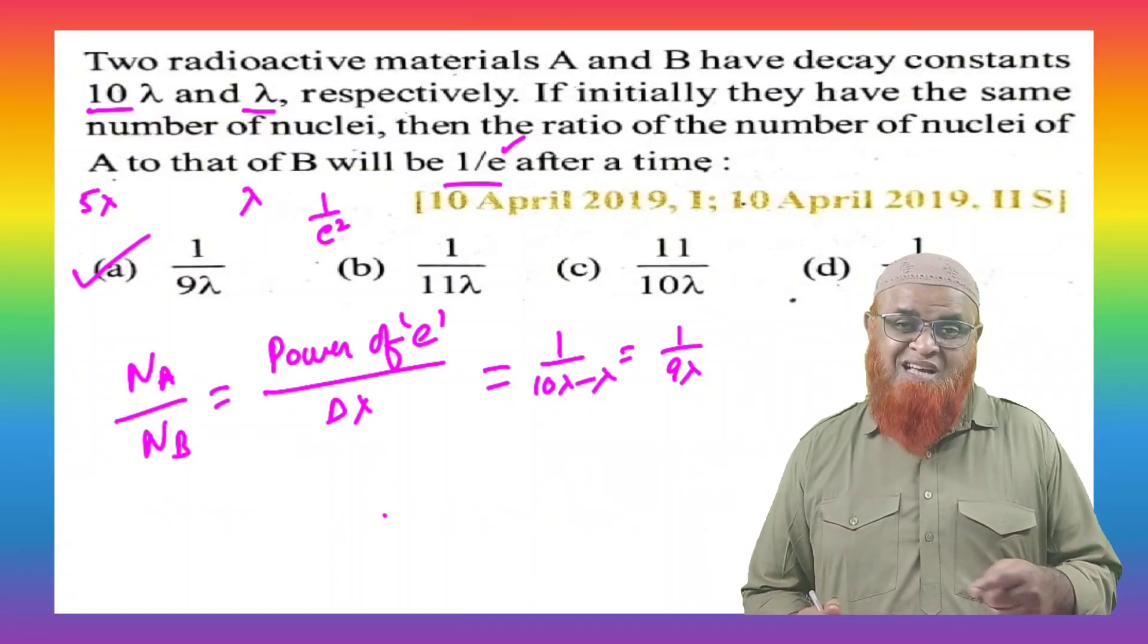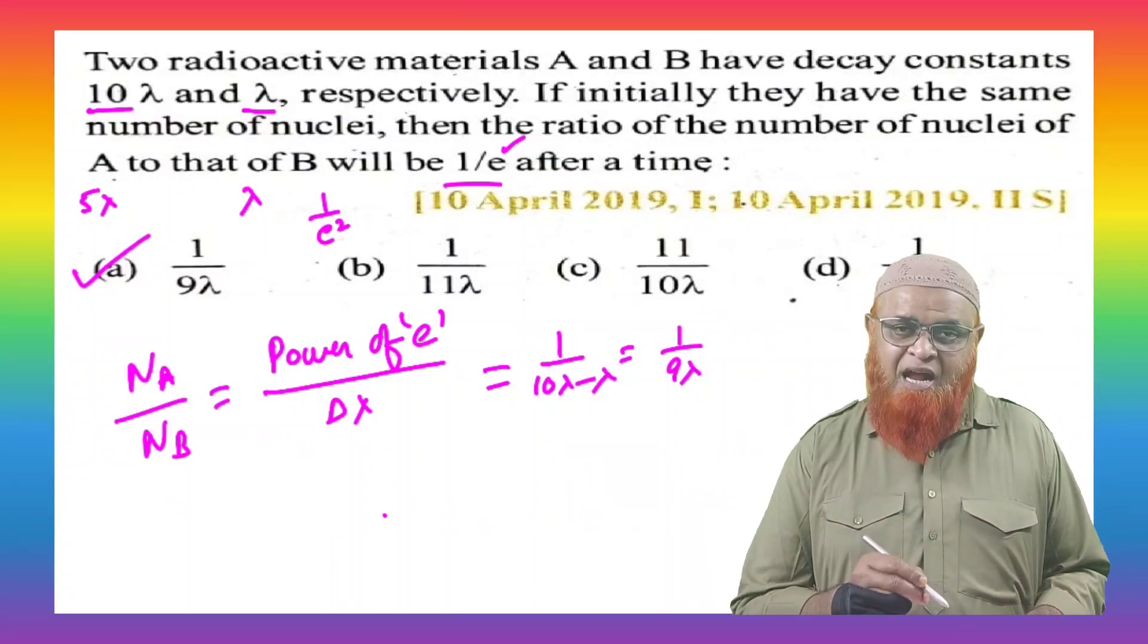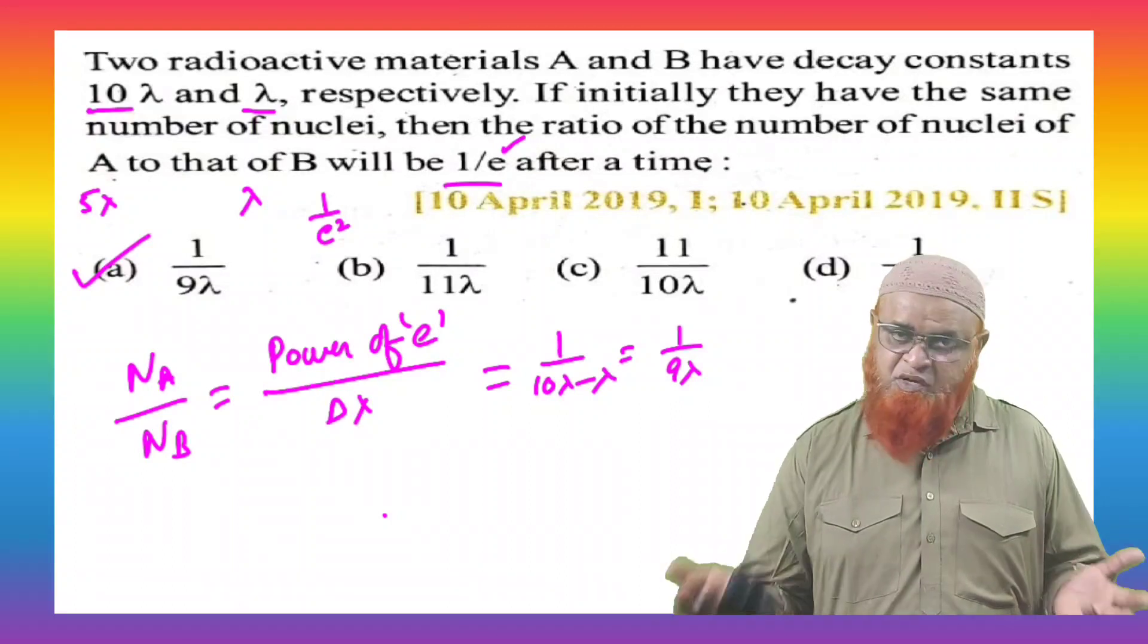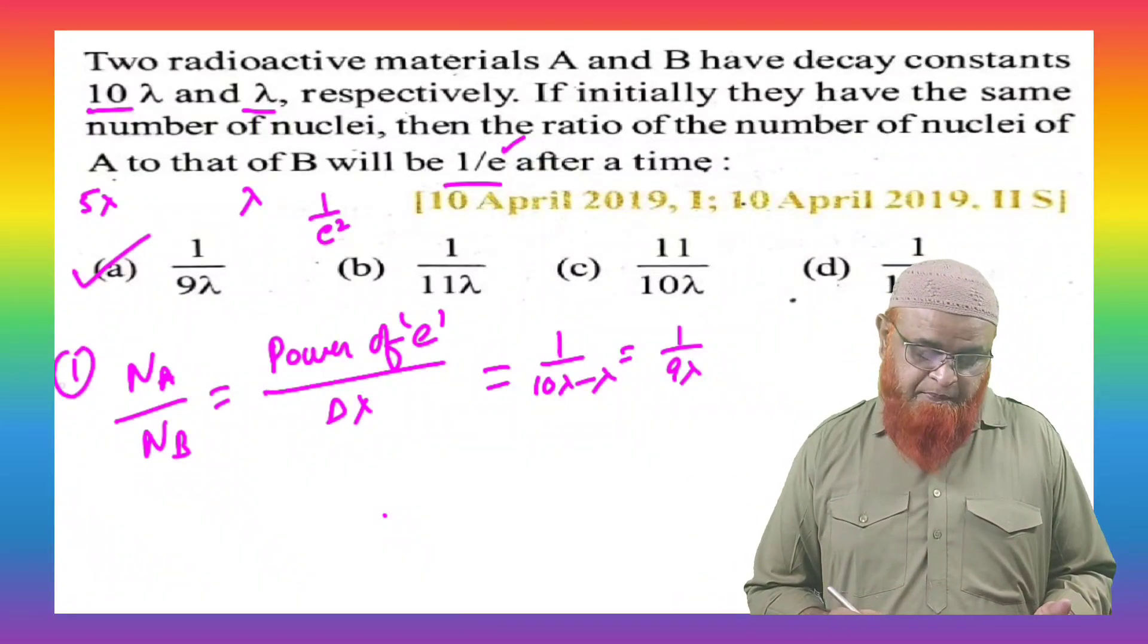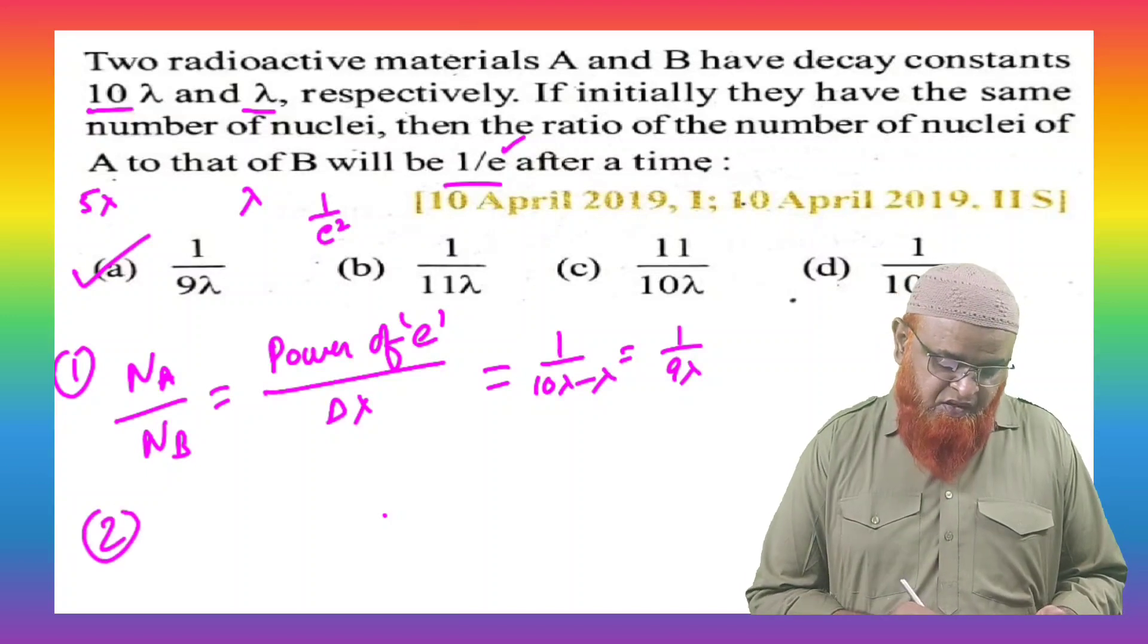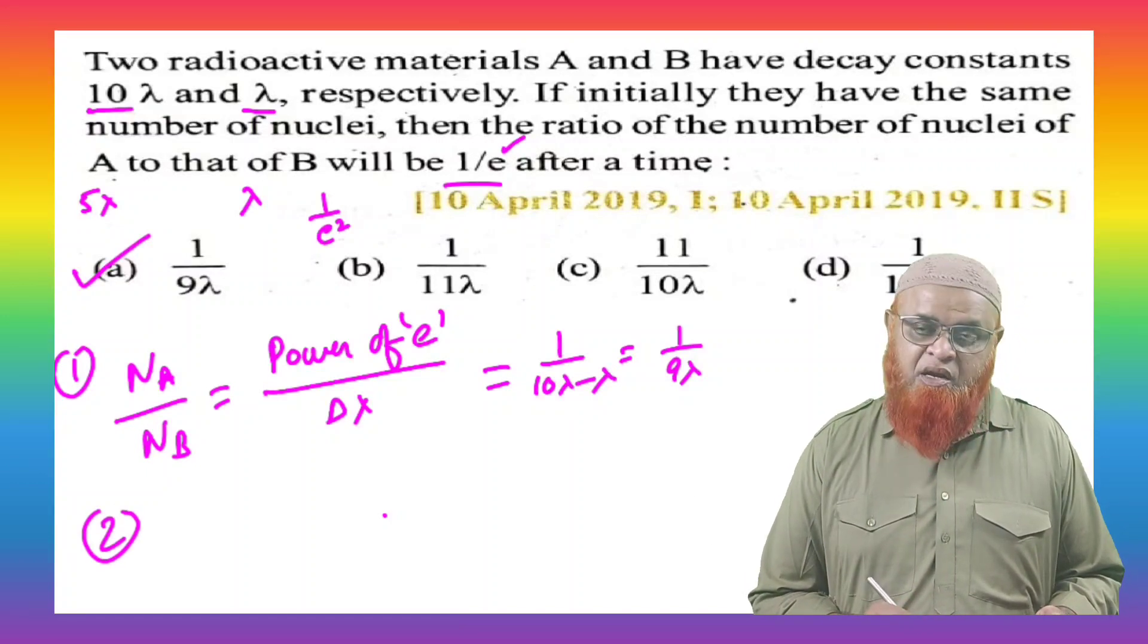Let me solve the same problem which was asked in NEET. Instead of 10 lambda, it was 5 lambda. Instead of lambda, there was lambda only. But instead of 1 by E, it is given 1 by E square. So this is the first problem. Second problem from NEET, I can solve now.